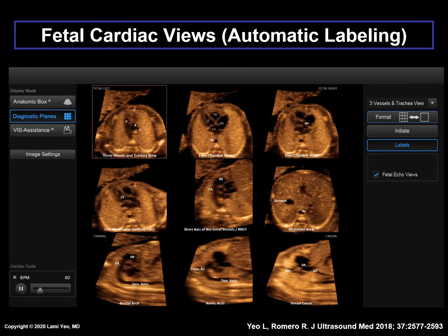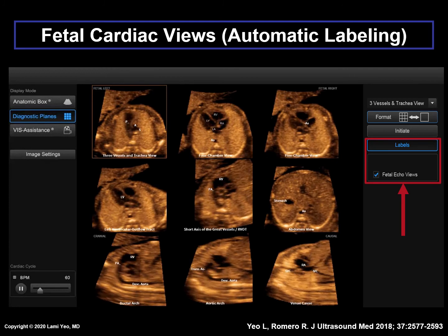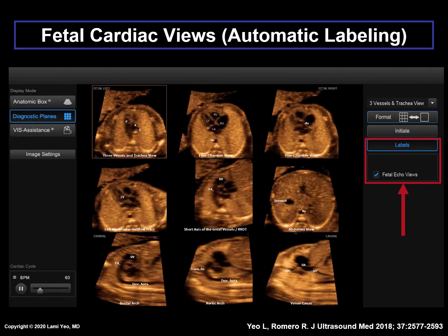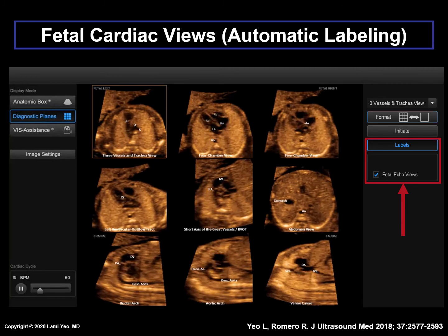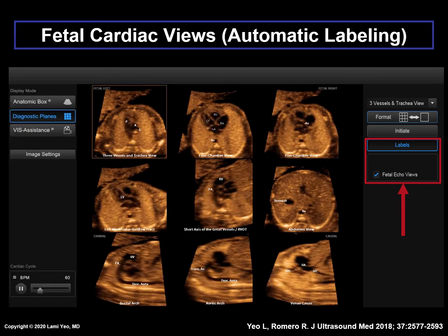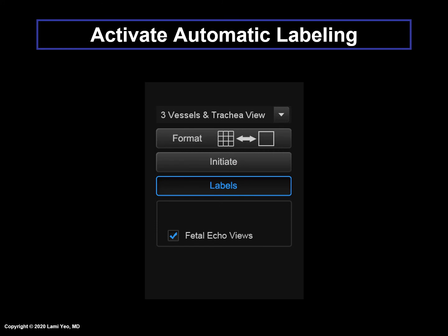To activate automatic labeling, one should press a combination of two buttons — Labels and Fetal Echo Views — as shown in the red box. In this example, all the automatic labeling has been activated, which includes all fetal cardiac views, the left and right sides of the fetus, cranial and caudal ends, as well as fetal anatomy. To achieve any of the four possible automatic labeling options, one should press a combination of these two buttons: Labels and Fetal Echo Views.